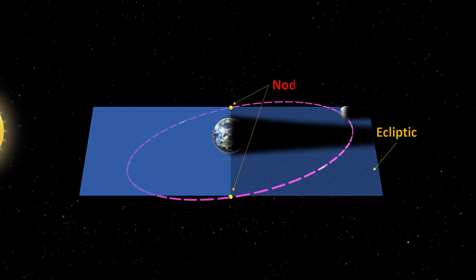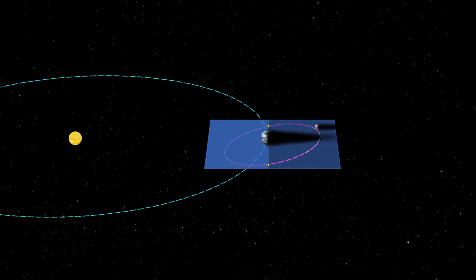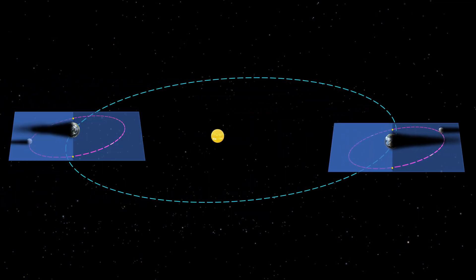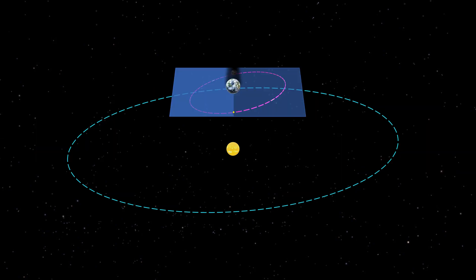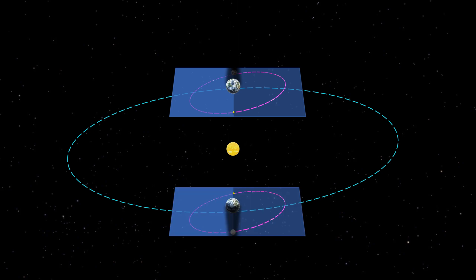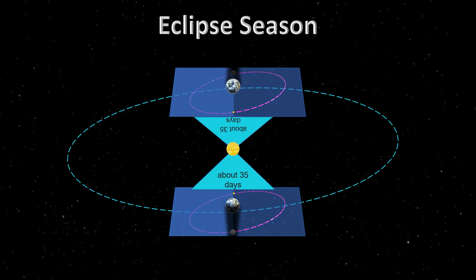There are two points known as nodes at which the orbit of the Moon intersects the ecliptic. A lunar eclipse can occur only when the full moon is near to a node. It is for this reason that the Moon is often above or below the ecliptic during a full moon, and so the shadow of the Earth rarely interacts with the Moon. But there are at least two periods during each year when a lunar eclipse can occur, due to the Moon crossing the ecliptic shortly before or after a full moon. Each season lasts about 35 days and repeats just short of 6 months later.